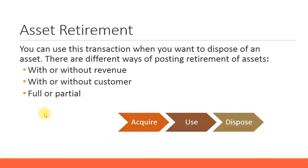Every asset will have some kind of a useful life, unless it's something like land where you can use it forever. All other types of assets will have an end of useful life. An asset can get damaged - for example, a chair under fixtures or furniture category might get broken, and you'd have to dispose of it fully. Sometimes an asset can also get lost; for example, a laptop you bought as an asset might get lost or stolen, so you'd need to perform the asset retirement transaction.